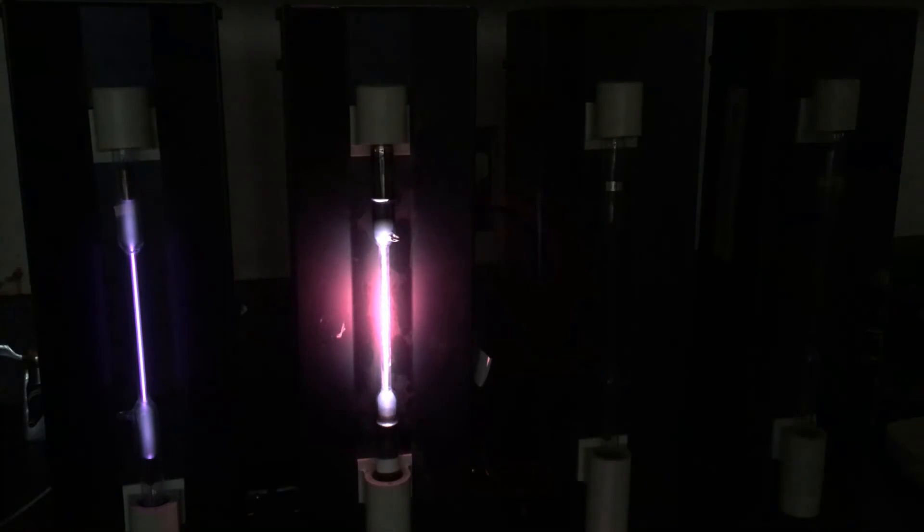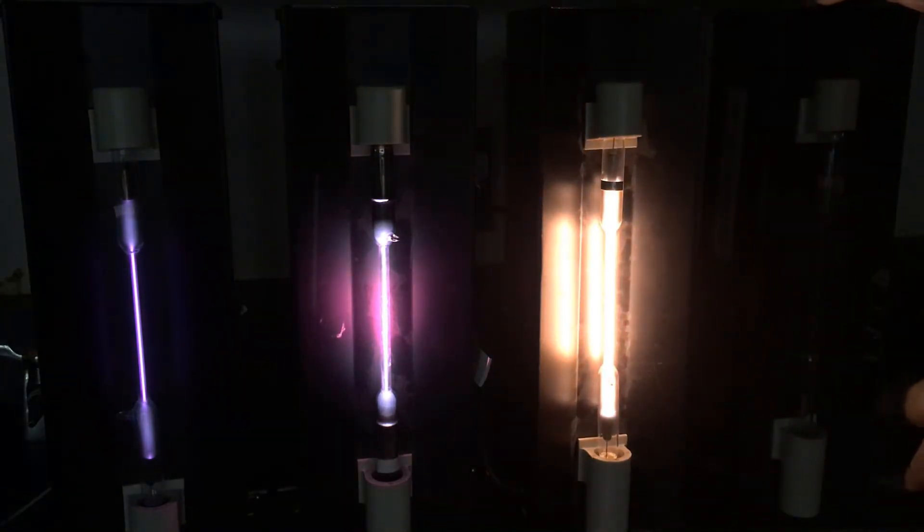What we're seeing here is the emission spectra as those electrons start falling back downwards—we're seeing the colors that are emitted.